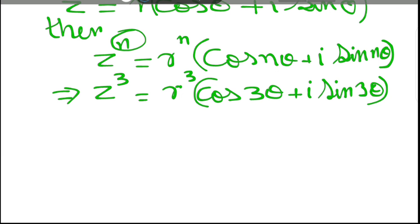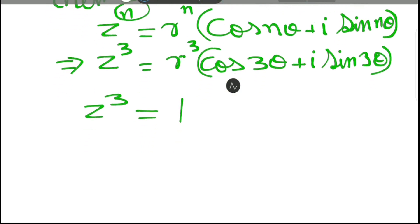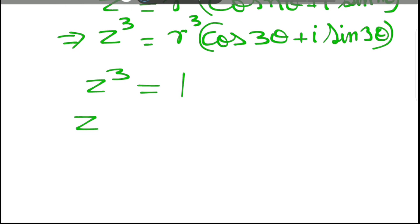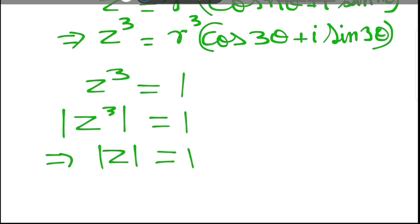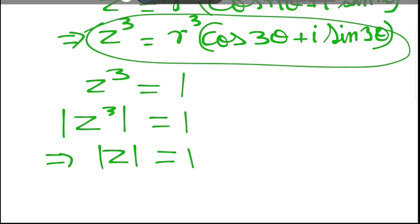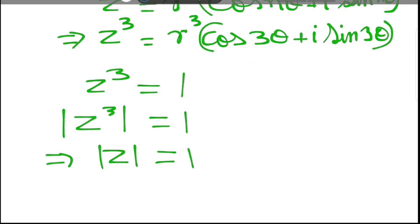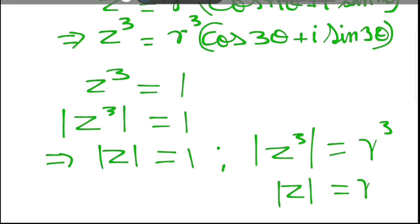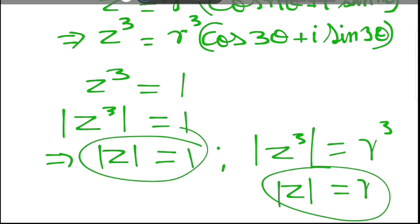We are given z cubed equal to 1. First of all, let's write z cubed equal to 1 and take the modulus of both sides. If you take the modulus of z cubed equal to 1, then we have mod z equal to 1. Since the modulus of (cos 3θ + i sin 3θ) equals 1, modulus of z cubed equals r cubed. So modulus of z equals r.